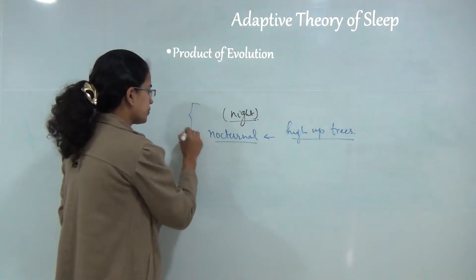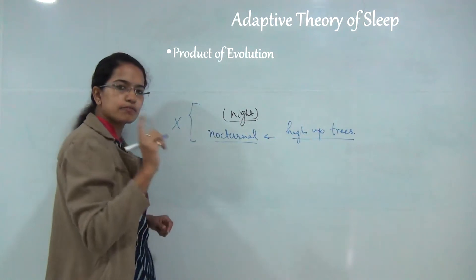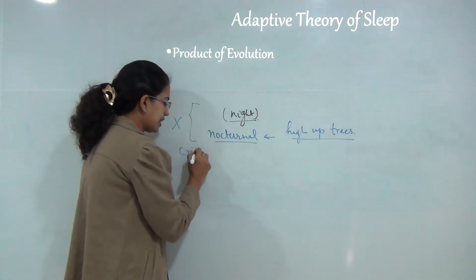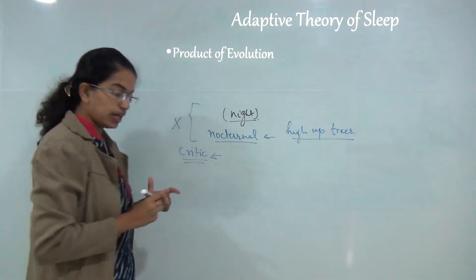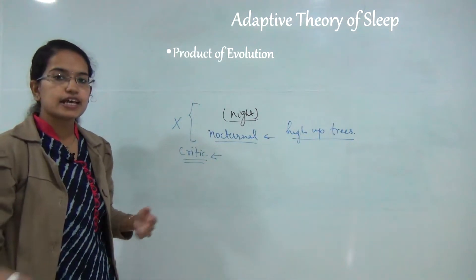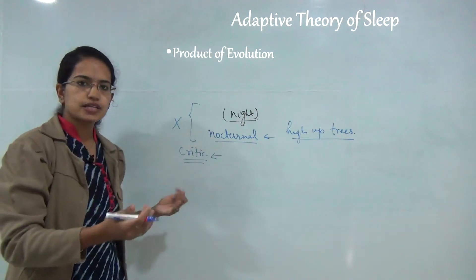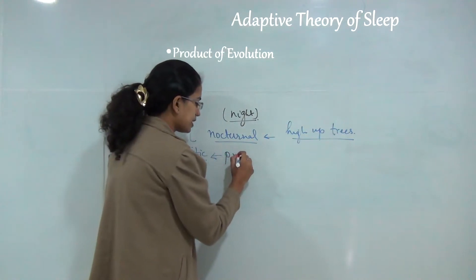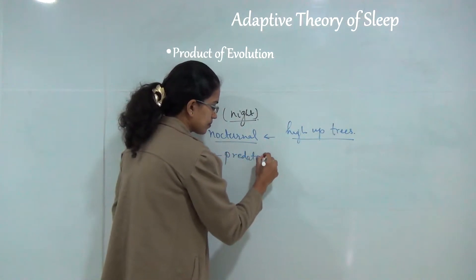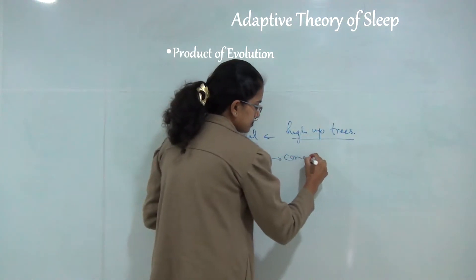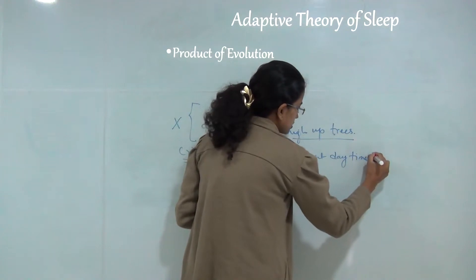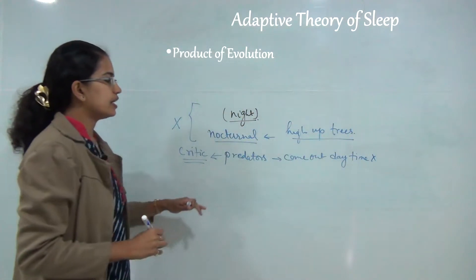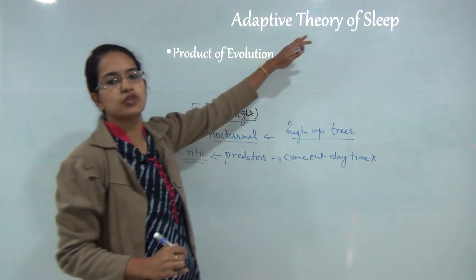But this theory was criticized on a major ground stating that if this theory stands true, then the predators will find their prey only during the day times. So predators should come out during daytime, and this was the major criticism laid down for this adaptive theory of sleep.